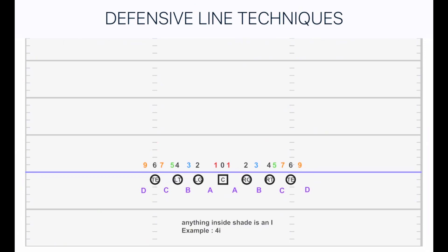Odd numbers — we're now talking about not being head up on defenders. So the one technique is not head up; they're outside shade or inside shade. Now the three technique — you kind of think of it more as an outside shade of the guards. But to make it easier on yourself, anything in between the guards and the tackle. So we have a three technique in between right guard and right tackle, and then the three technique in between left guard and left tackle.